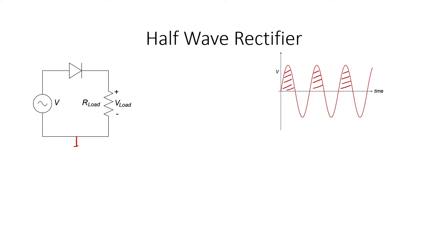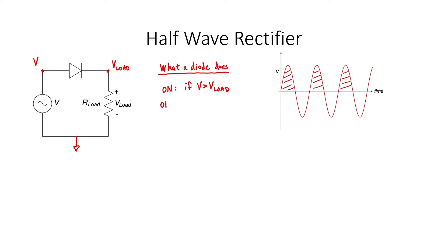If we call this node ground, and we call these two nodes V and V load, then we can think about what the diode does by comparing the two node voltages. A diode only allows current to pass in the forward direction, and it blocks current in the reverse direction. That means that if V is greater than V load, current's going to go through the diode. But if the load voltage is higher than V, then current's going to be blocked. Current always flows from high voltages down to low voltages.